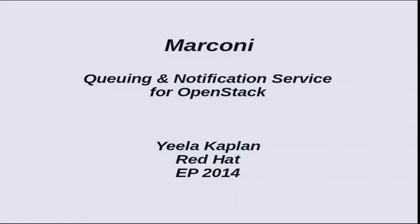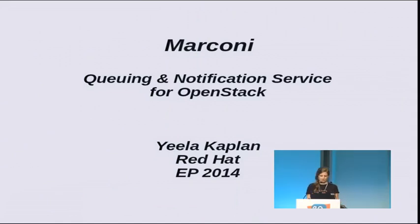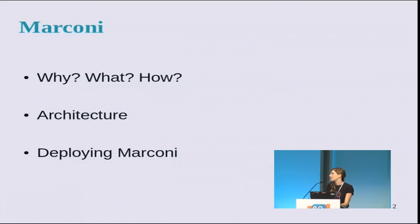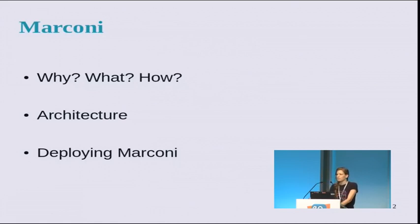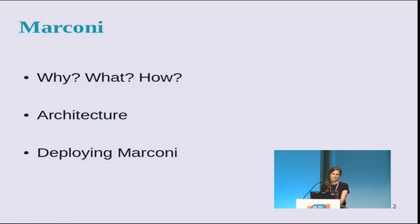I'm working for Red Hat mostly around virtualization. I've been contributing to oVirt mostly around the storage area and to OpenStack's Marconi project. Today I want to talk about Marconi, which is a queuing and notification service for OpenStack. We'll cover why we need a messaging service, what Marconi is, a high-level overview, and use cases for deploying Marconi in your own cloud environment.